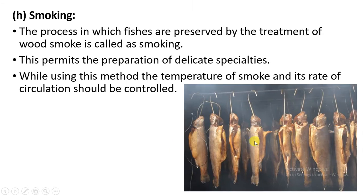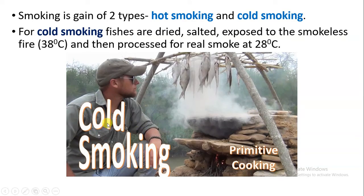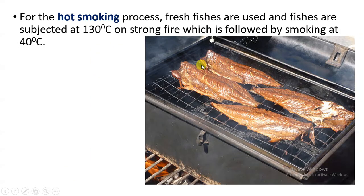The next method is smoking. This is a process in which fishes are preserved by treatment of wood smoke. The temperature of the smoke is very important, and the rate of circulation of smoke must be evenly distributed and controlled. Smoking is of two types: hot smoking and cold smoking. In cold smoking, the fishes are dried, salted, and exposed to smokeless fire at about 38 degree Celsius, and then exposed to real smoke at 28 degree Celsius.